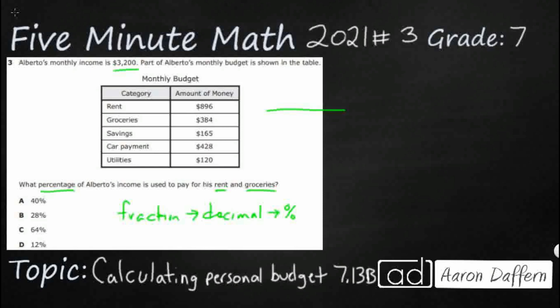Our numerator is going to be our part, and our denominator is going to be our whole. Our part is going to be rent plus groceries — R plus G. Our whole is the monthly income of $3,200, which they give us. So our rent is $896 and groceries is $384.